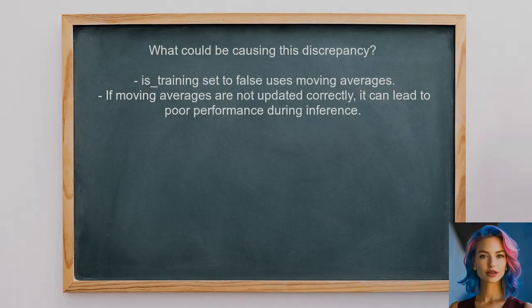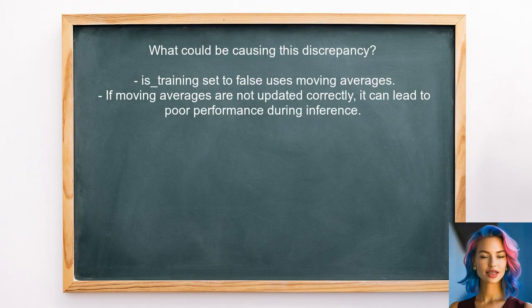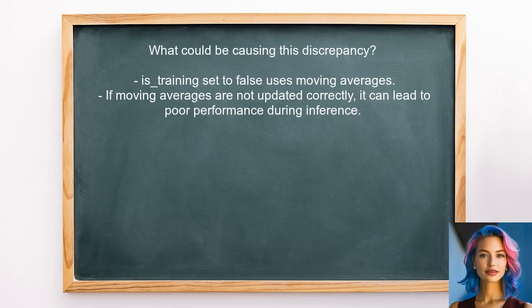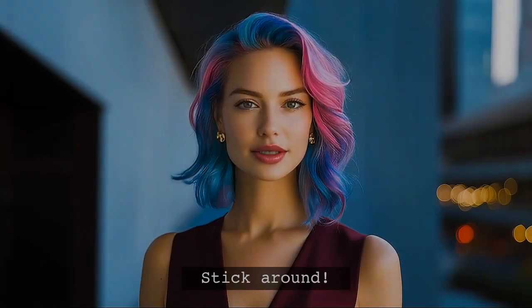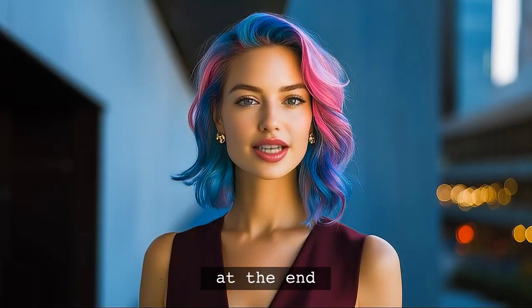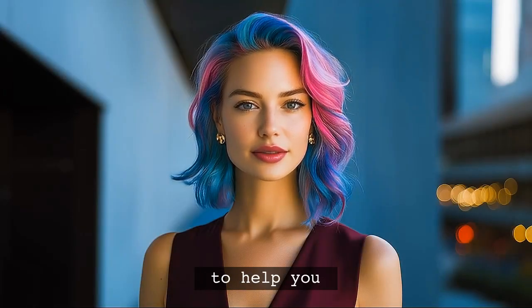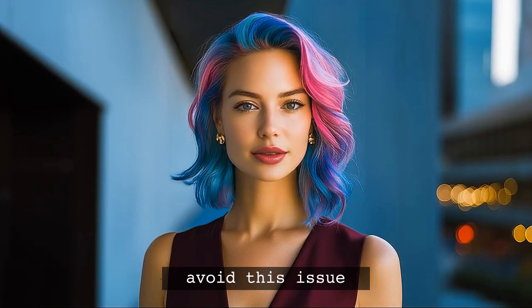So what could be causing this discrepancy? When is_training is set to false, the batch normalization layer uses moving averages instead of batch statistics. If the moving averages are not updated correctly during training, it can lead to poor performance during inference. Stick around — at the end of this video, I'll share a crucial tip that can help you avoid this issue in the future.